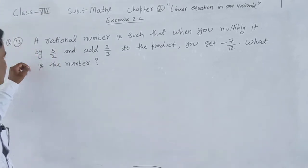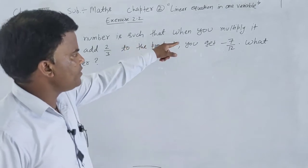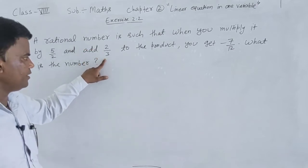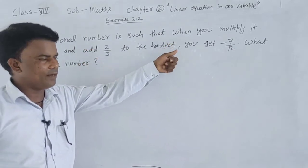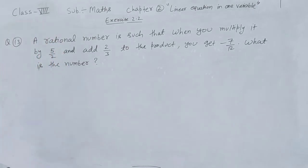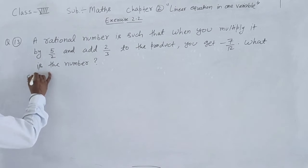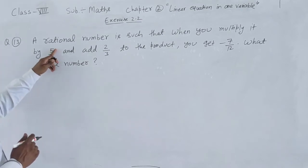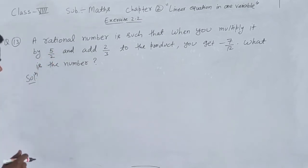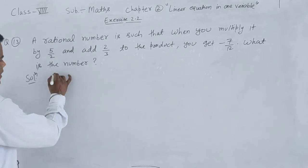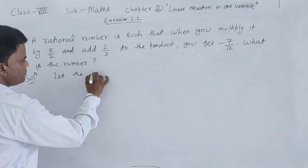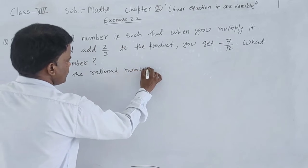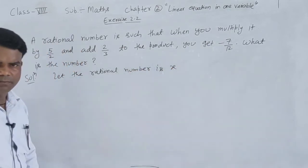Question number 13. A rational number is such that when you multiply it by 5 upon 2 and add 2 upon 3 to the product you get minus 7 upon 12. What is the number? A rational number, you don't know the rational number. Let the rational number be x.